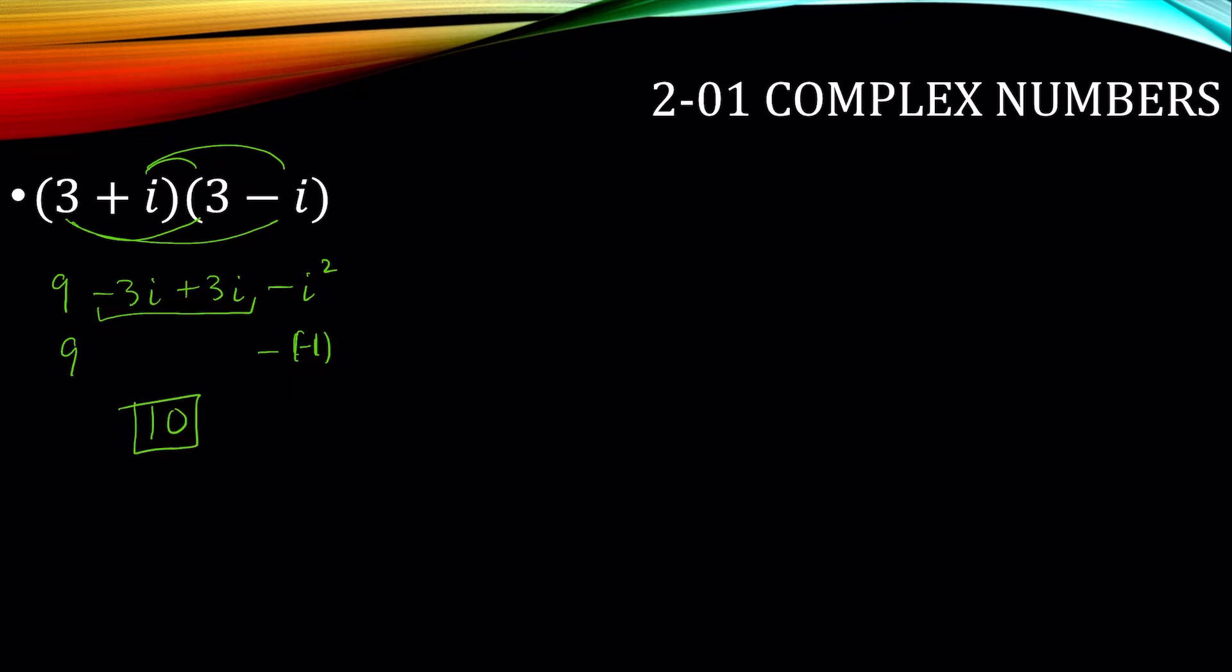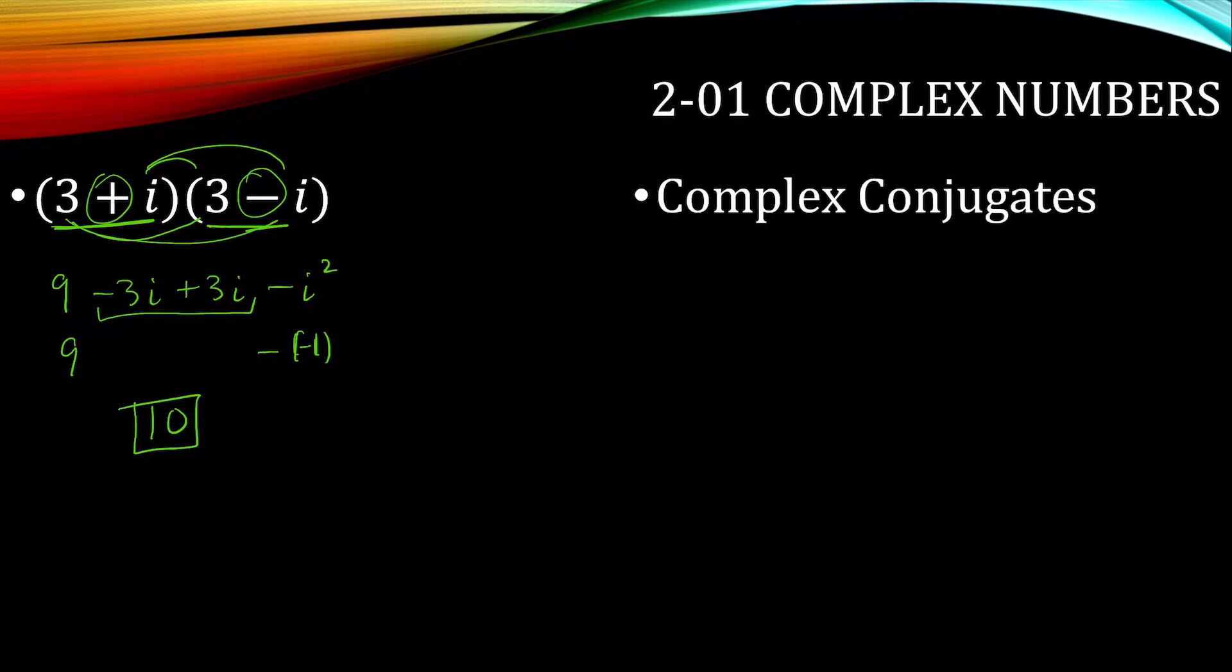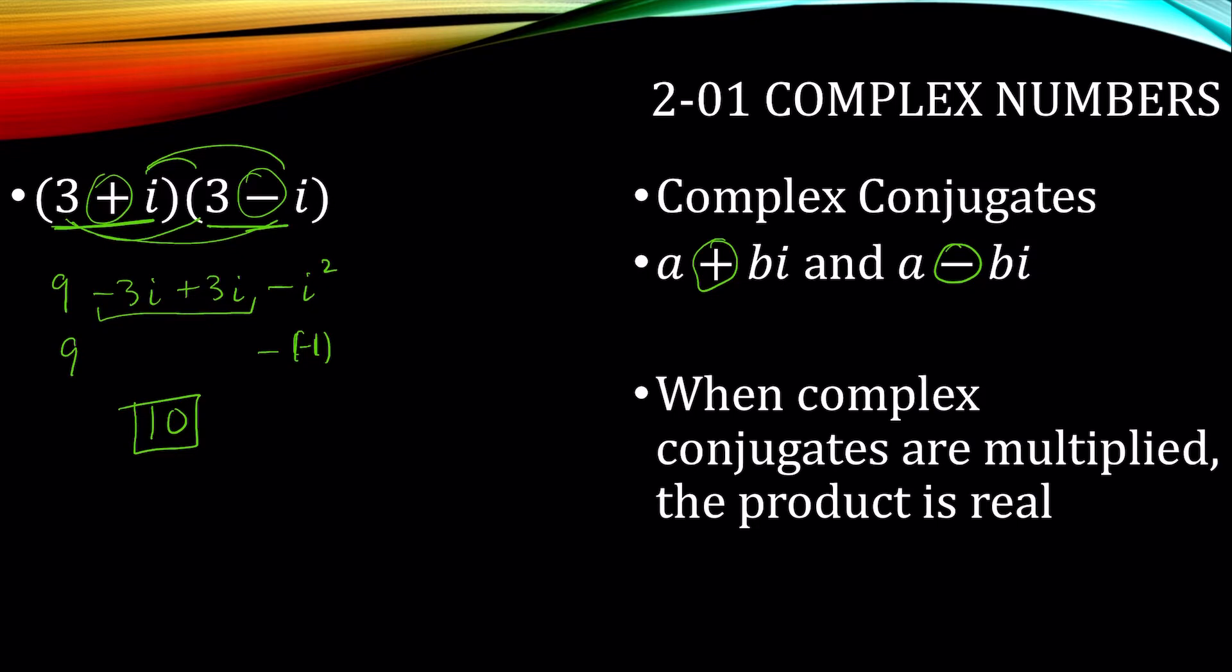Notice that that is only real. There's no i's in that answer. Notice the numbers are 3 plus i and 3 minus i. The only difference was the sign in the middle. Those are complex conjugates, where it's the same numbers, the difference is the sign in the middle. When complex conjugates are multiplied, the product is always a real number.